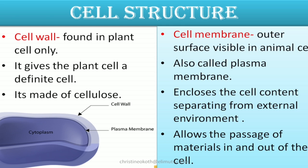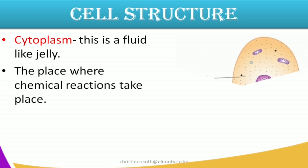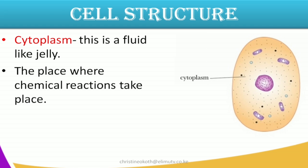The next structure we're going to look at is the cytoplasm. If you look at the illustration where it's pointing the cytoplasm — this is a fluid-like jelly. It is the site where all the chemical reactions in the cell take place, and it is found inside the cell.